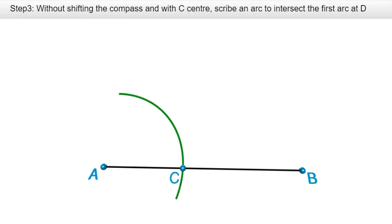Step three, without shifting the compass and with C as center, I'm going to scribe an arc to intersect the first arc at D. So I'm going to move the metal tip of the compass from A to C and I must take care to ensure that the compass does not shift.